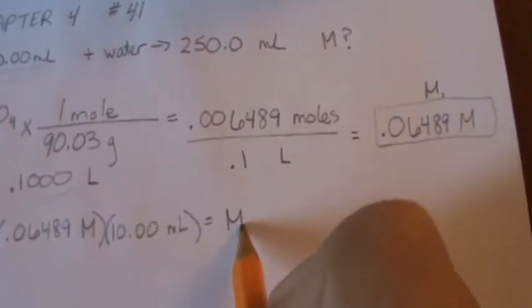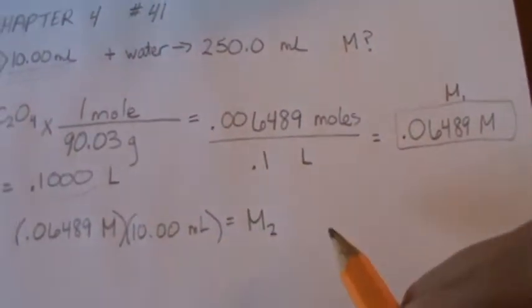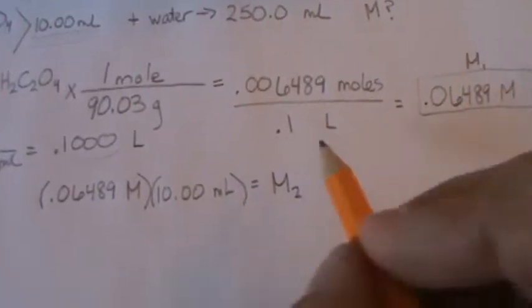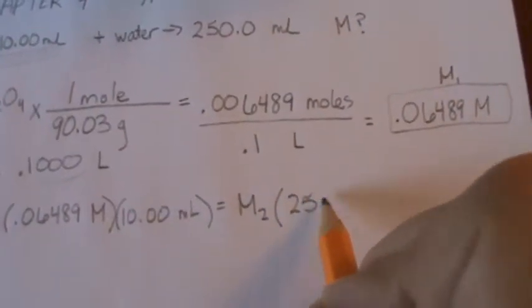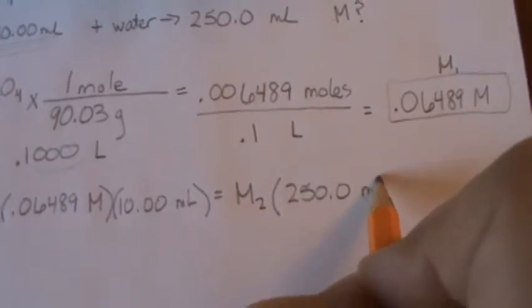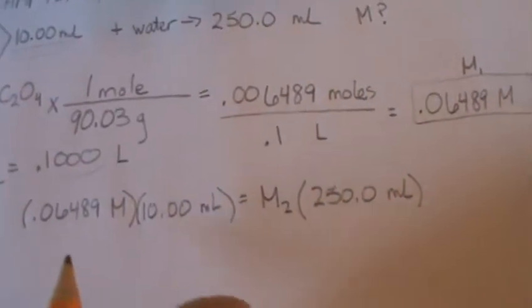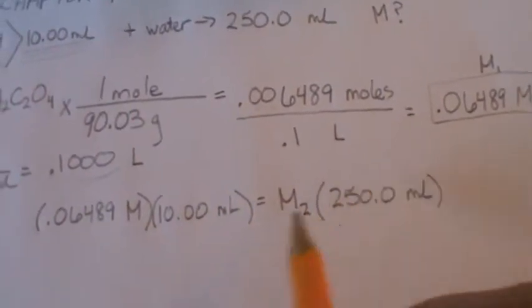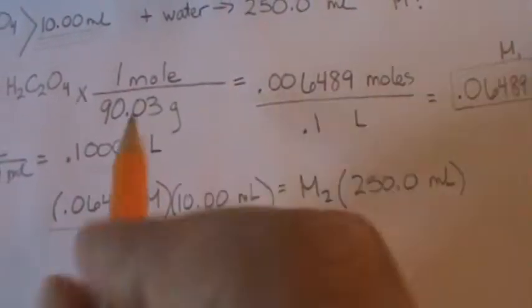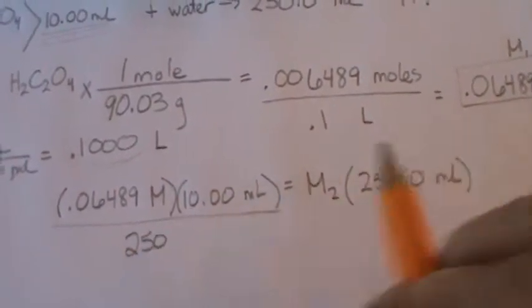And that's equal to, well, M2. That's what we don't have, we're looking for this final molarity. And we multiply that by our new volume, which is 250 milliliters. So in order to get M2 all by itself, we divide both sides by 250. And that makes this term go away.